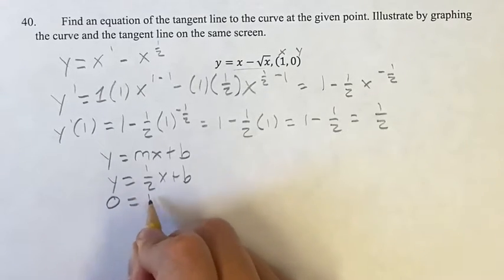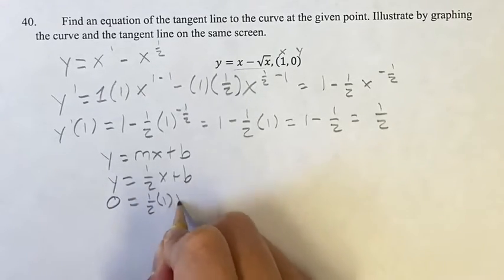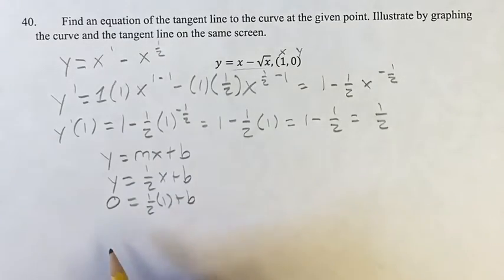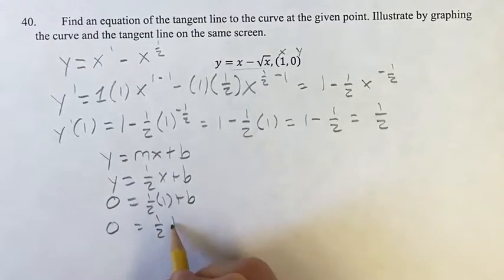So we have 0 for y is equal to 1 half x, so 1 half times 1, plus b. 0 is equal to 1 half times 1 is 1 half, plus b.